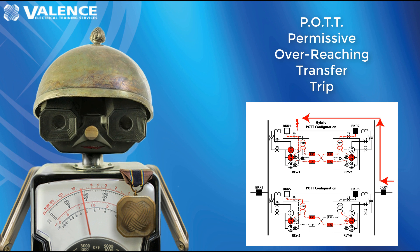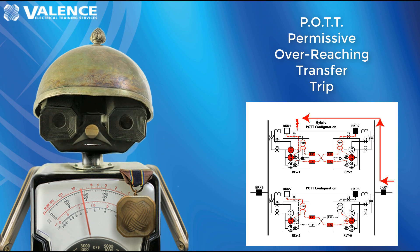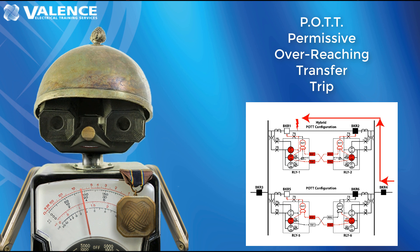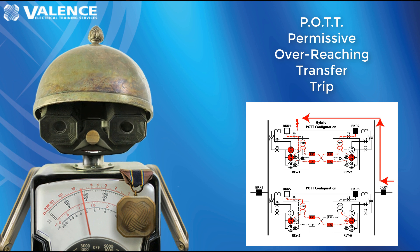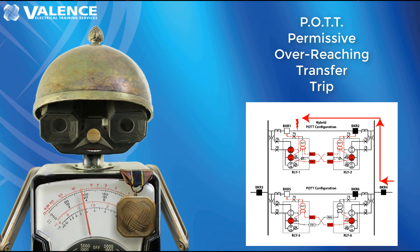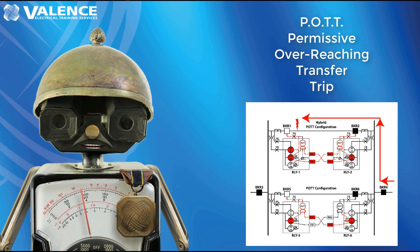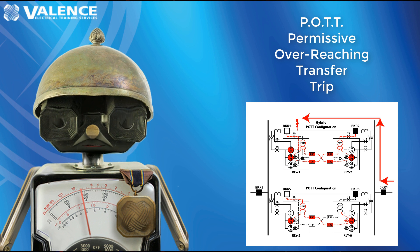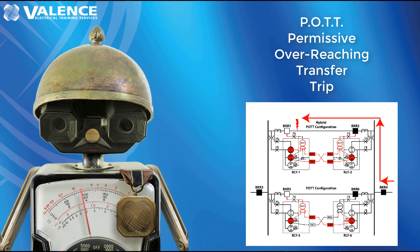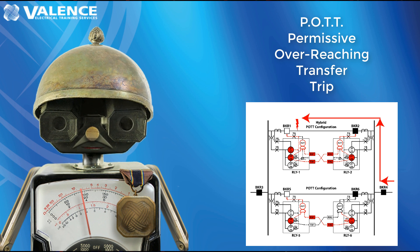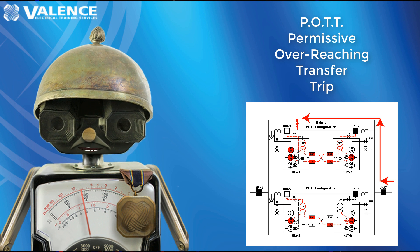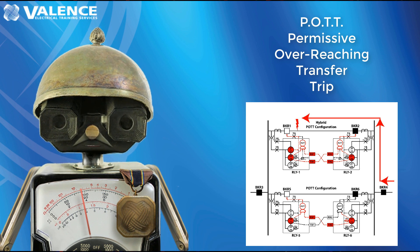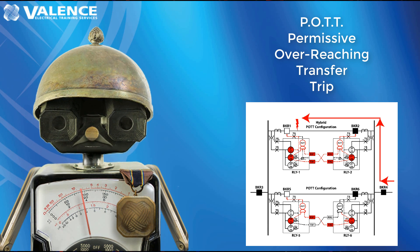Welcome to the fifth video in our end-to-end testing series. We'll be looking at permissive overreaching transfer trip, or POT, communication-assisted trip schemes in this video. I'm going to assume that you've watched all the previous videos in this series, so I won't rehash what to look for in this animation. If you have not watched the previous videos, stop now and click the link to watch them first so that you can follow along. Now that the introductions are out of the way, we can start by decoding the term POT.